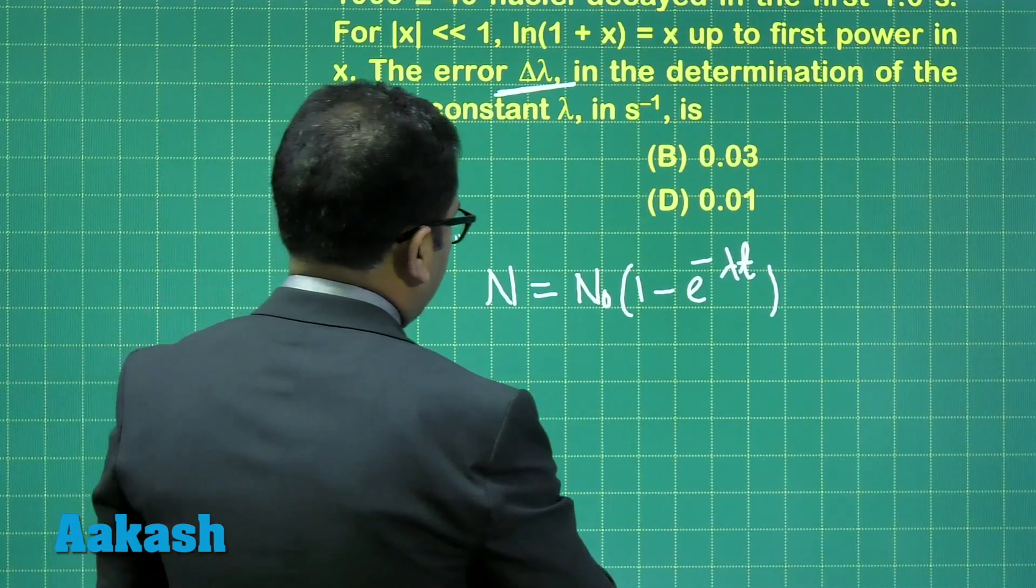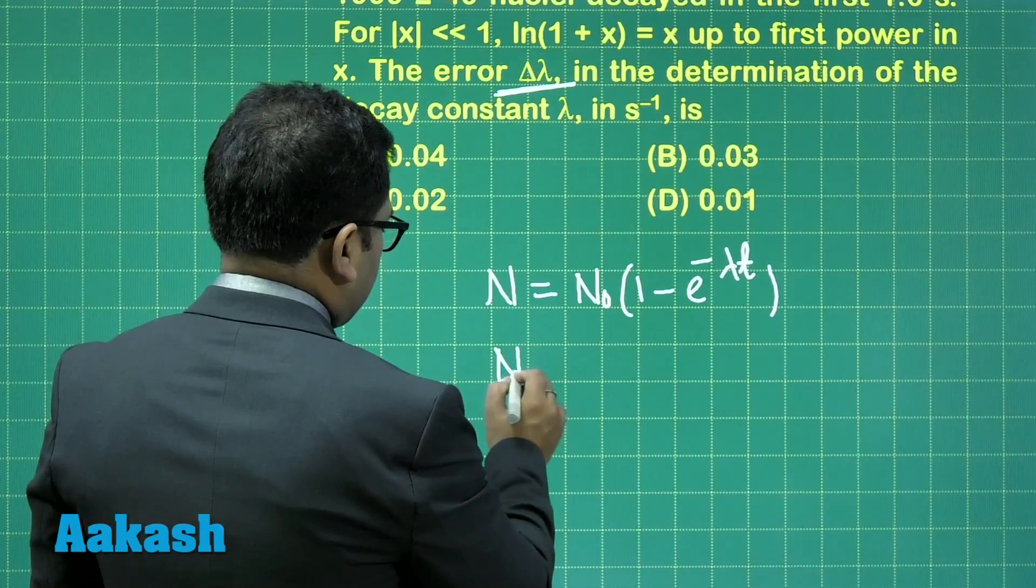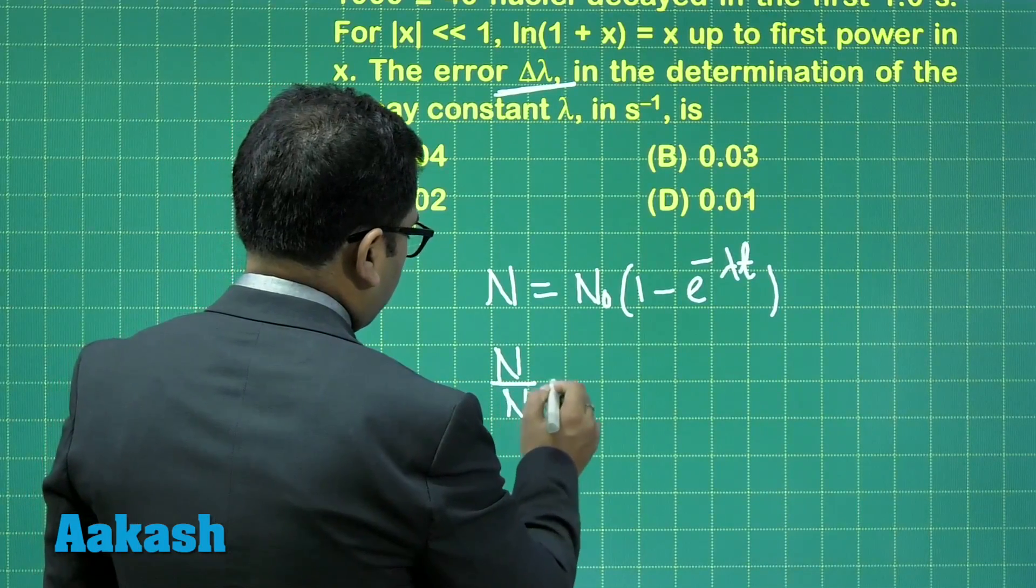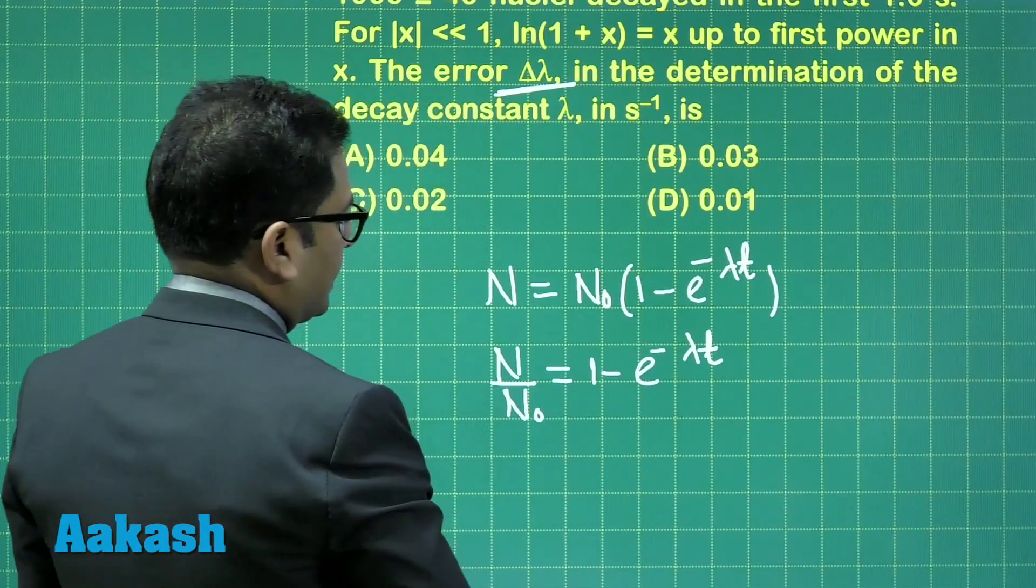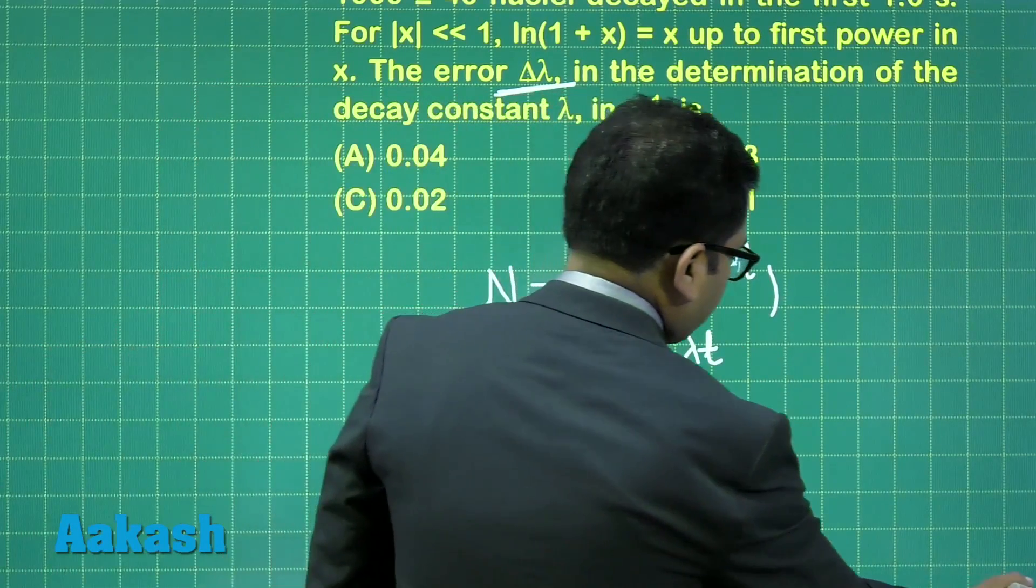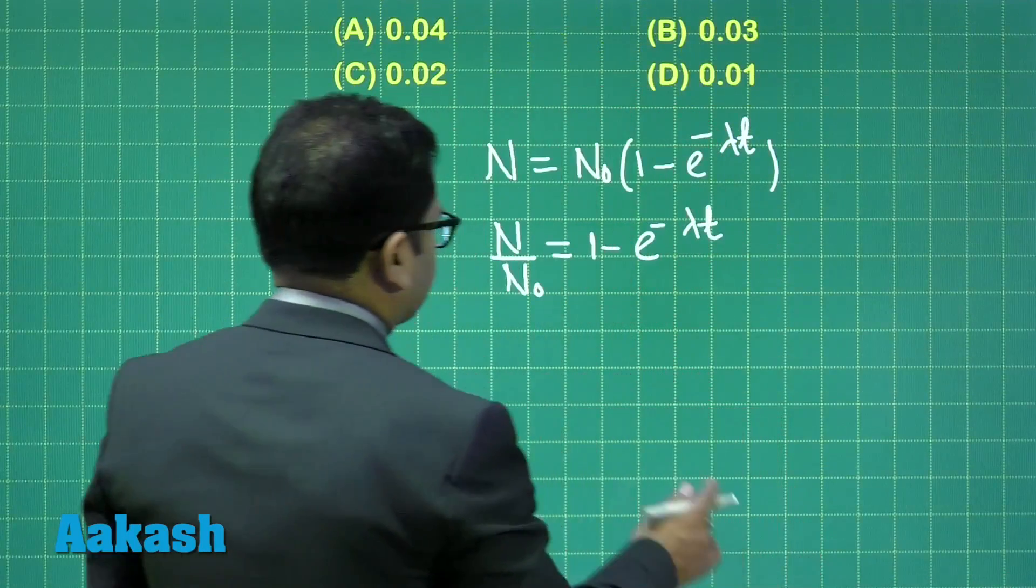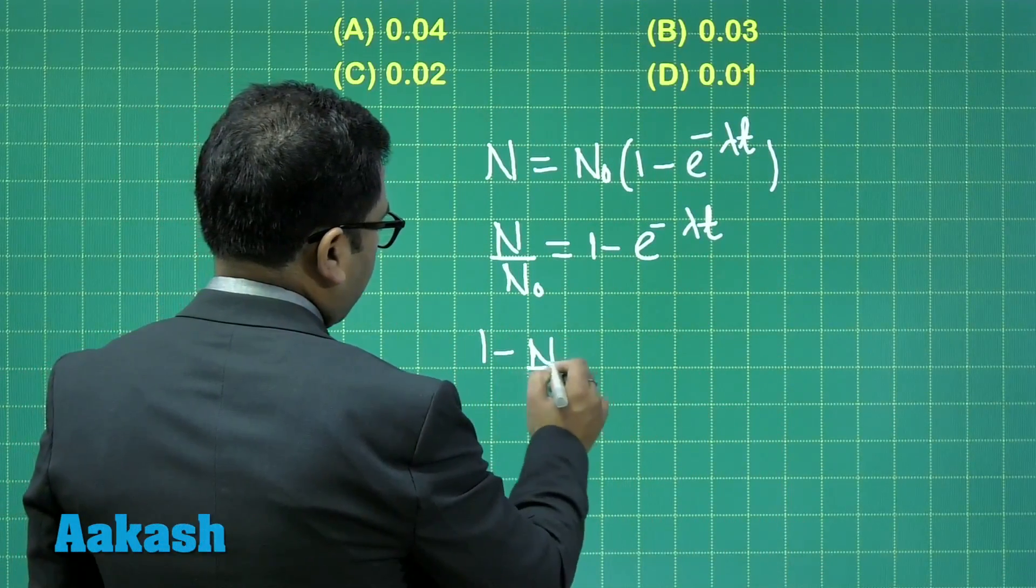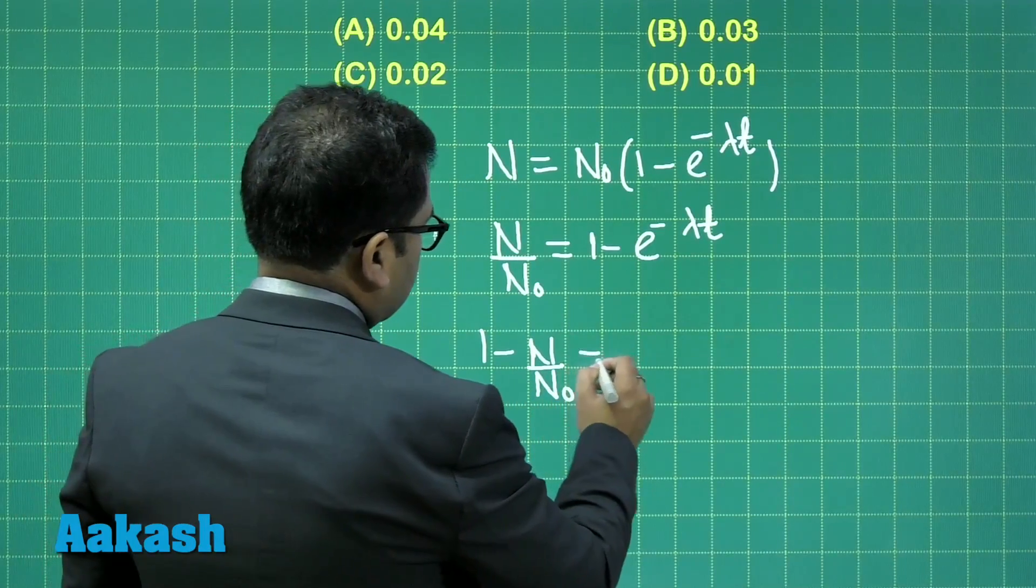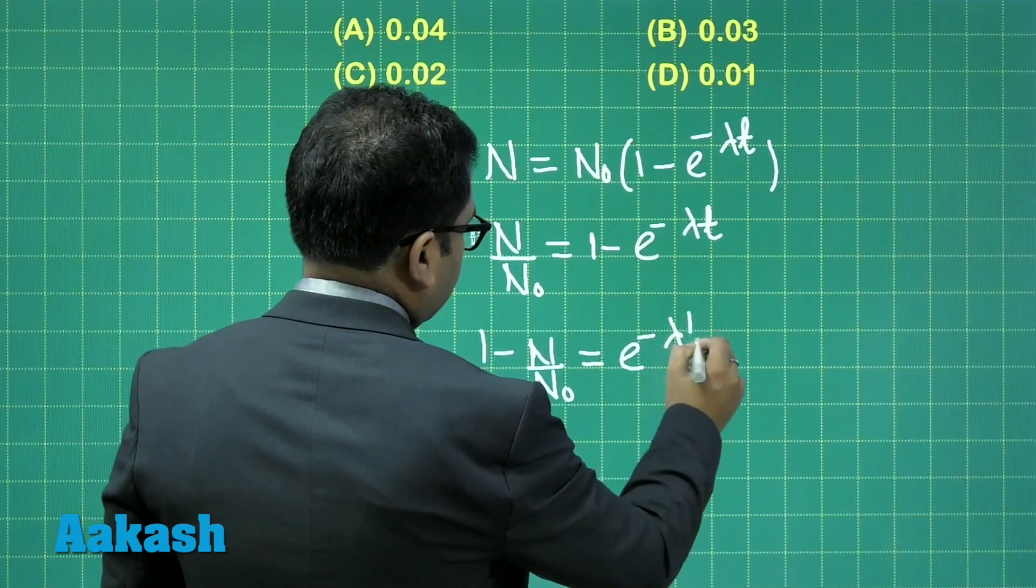Let's make some simple calculation here, and that will give me N by N naught is 1 minus e raised to the power minus lambda t. And further, let's try to see this. The expression is quite simple. That is going to give me 1 minus N by N naught is e raised to the power minus lambda t.